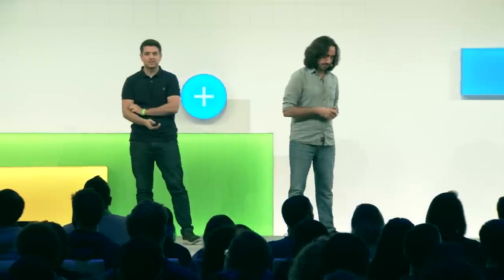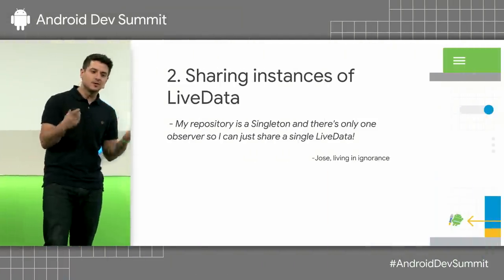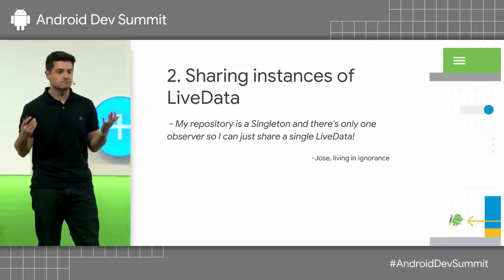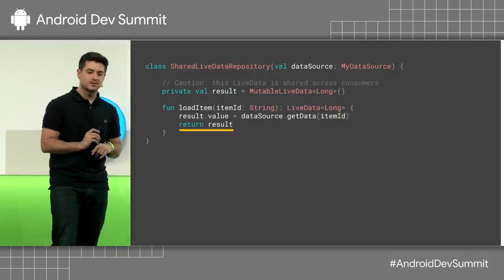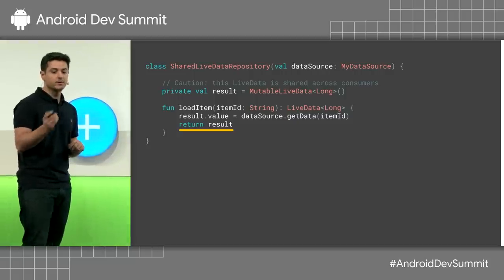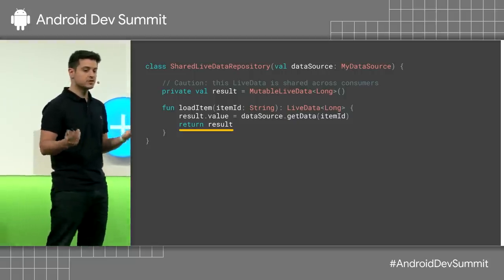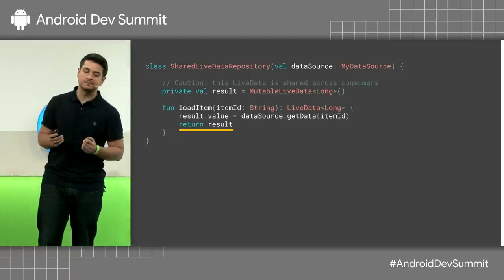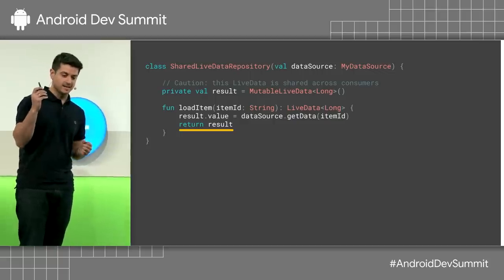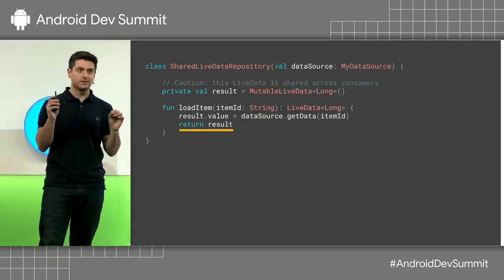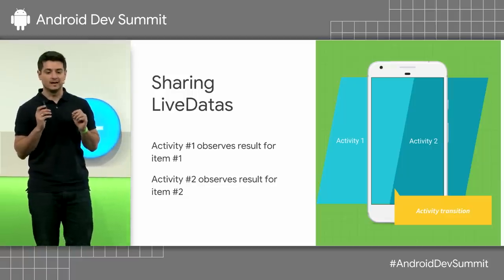The second item is about sharing instances of LiveData. At one point, I was trying to make an app with LiveData, and I had a repository that was a singleton. There was only one observer in the activity, so I said I can just share a single LiveData. The mutable LiveData returned in loadItem is shared by everyone that calls loadItem. Now, this is fine — it works — but there's a very interesting edge case. This anti-pattern is about you thinking about which observers are going to be active.